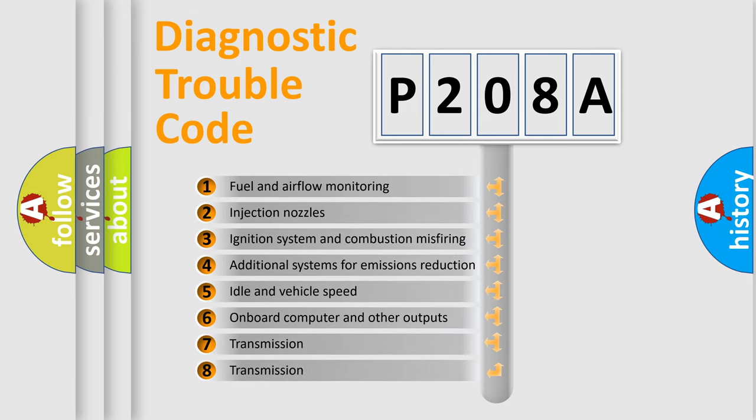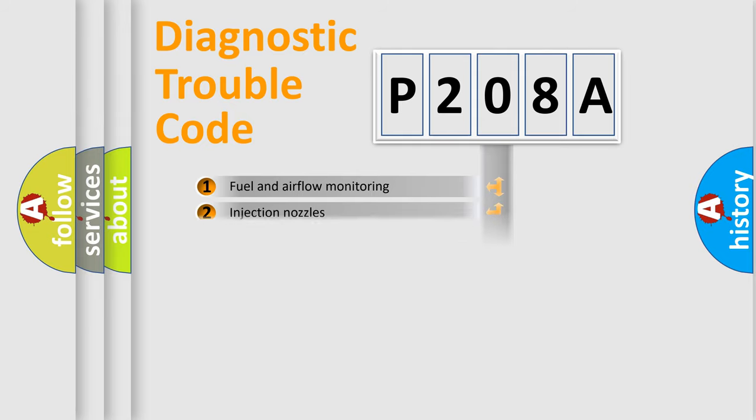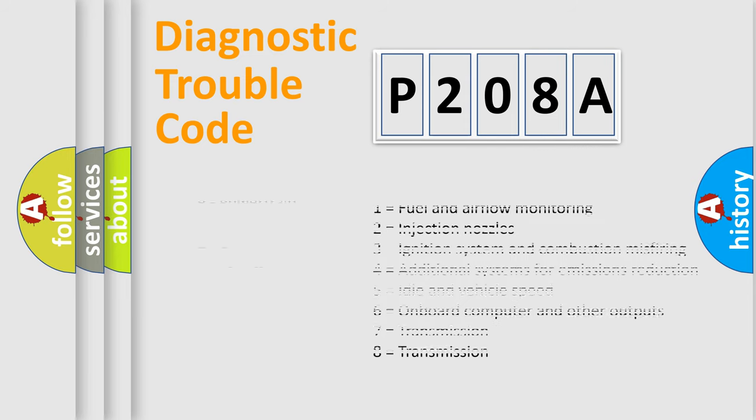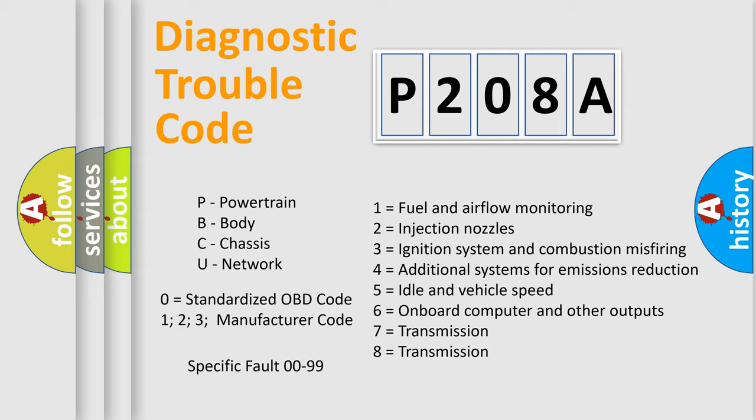The distribution shown is valid only for the standardized DTC code. Only the last two characters define the specific fault of the group. Let's not forget that such a division is valid only if the second character code is expressed by the number zero.